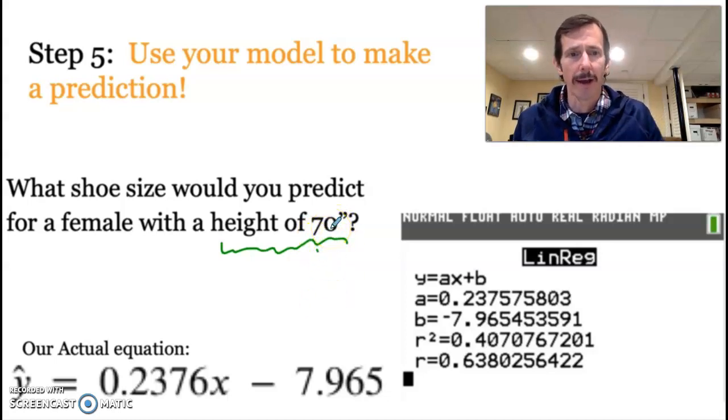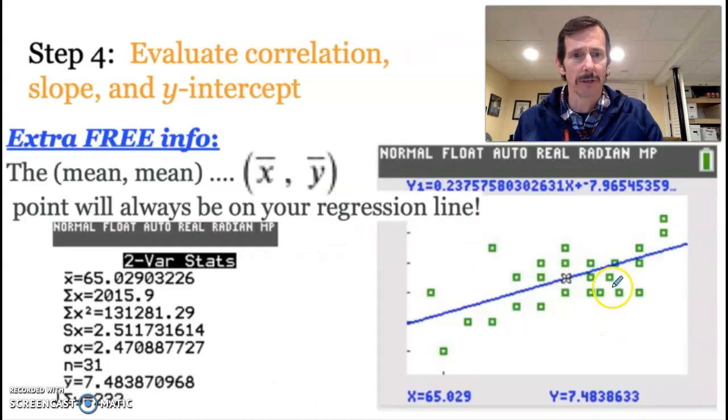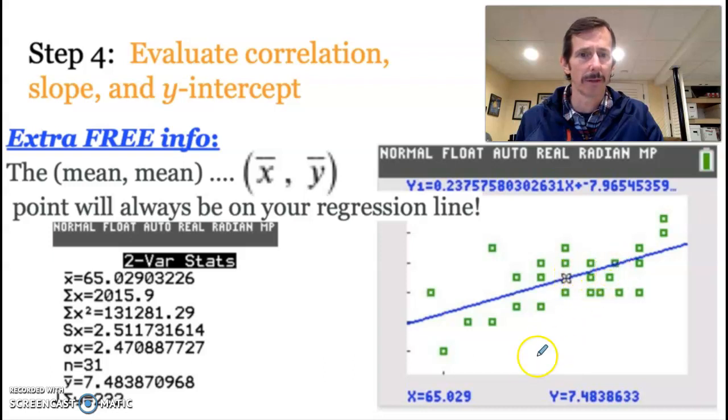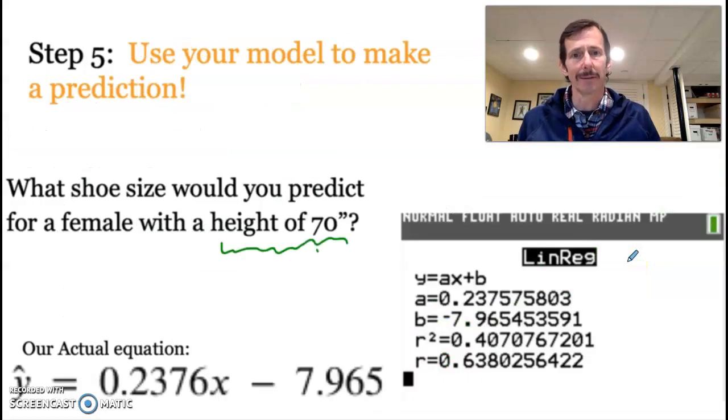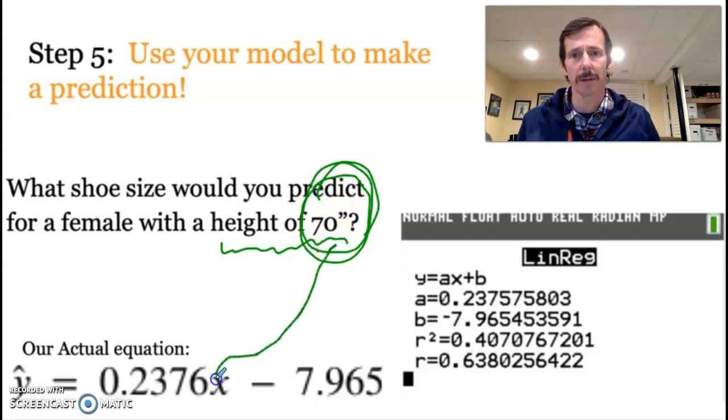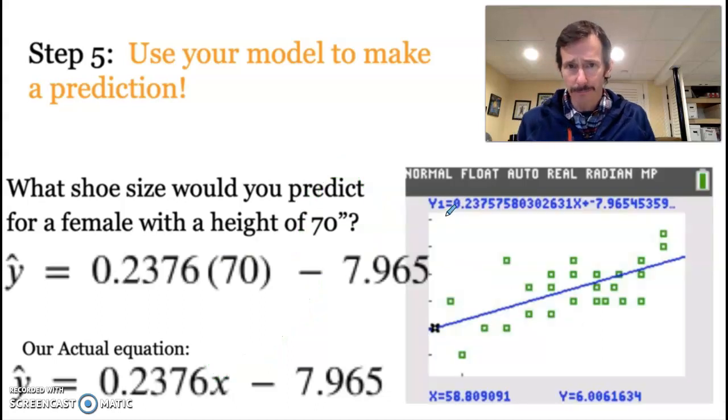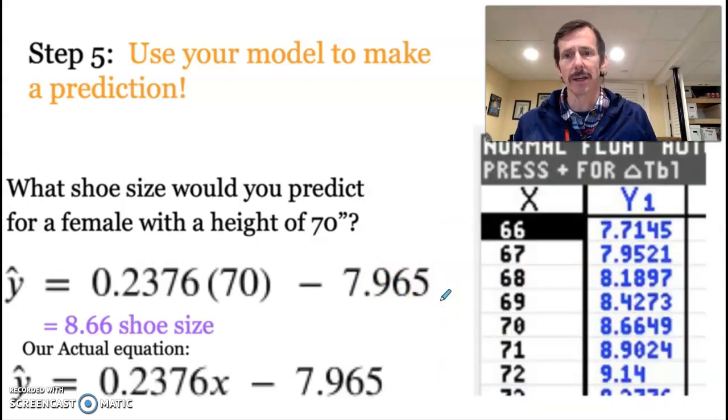And again, if I went back to my graph to do this, which is right here, this is x bar of 65. So if I went over a little bit more to the right to 70, I'm looking for where on this line the shoe size would be for a female who was 70 inches tall. But it's a lot easier to use an actual equation. So I'm going to take this 70, and I'm going to plug it in right there for x. And I'm going to put it right there for x into my equation and make a calculation. And when I put that 70 in, I will multiply it by the slope, and then I will subtract 7.965 from it, and it will give me my actual answer, which is 8.66.